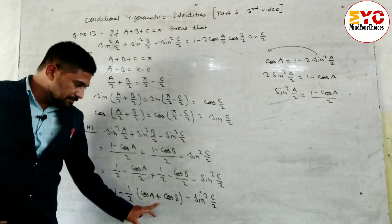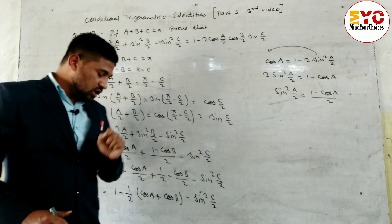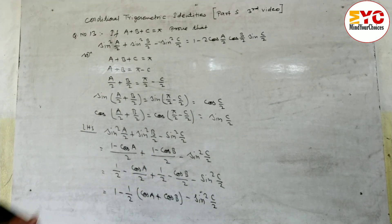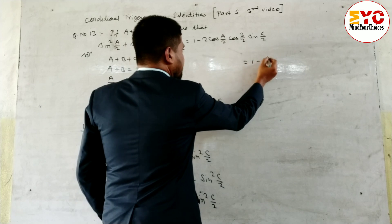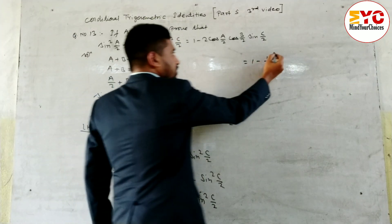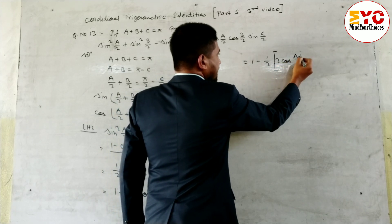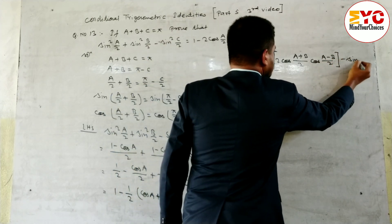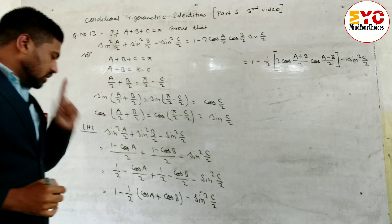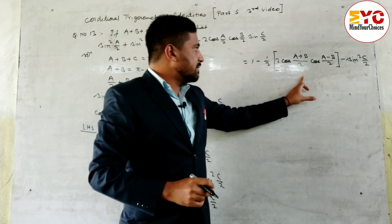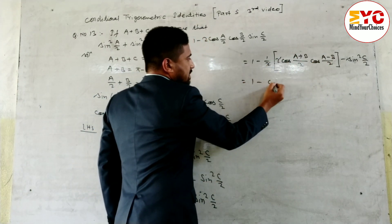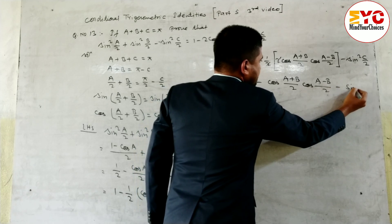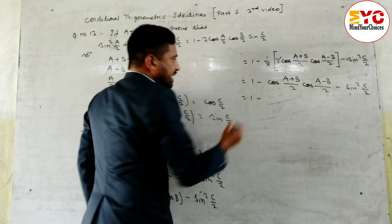The expression cos A plus cos B is in the form cos C plus cos D, and the formula is 2 cos((C plus D) by 2) cos((C minus D) by 2). Here C is A and D is B. Applying the formula: 1 minus 1 by 2 times 2 cos((a plus b) by 2) cos((a minus b) by 2) minus sin square(c by 2). The 2s cancel, giving 1 minus cos((a plus b) by 2) cos((a minus b) by 2) minus sin square(c by 2).